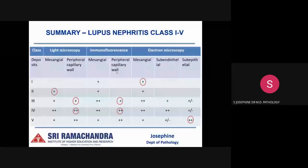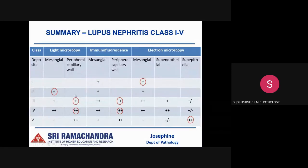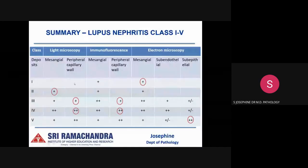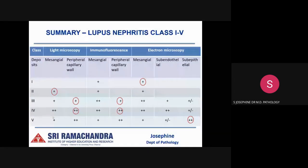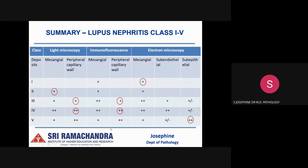To summarize classes 1 through 5: classes 1 and 2 are characterized predominantly by mesangial deposits — in class 1 detected only by IF or EM, in class 2 also by light microscopy. Classes 3 and 4 both have peripheral capillary wall deposits; class 3 involves less than 50% of glomeruli and class 4 involves 50% or more, both detectable by light microscopy, IF, and EM. The characteristic feature of class 5 is the presence of sub-epithelial deposits identified by EM and immunofluorescence.